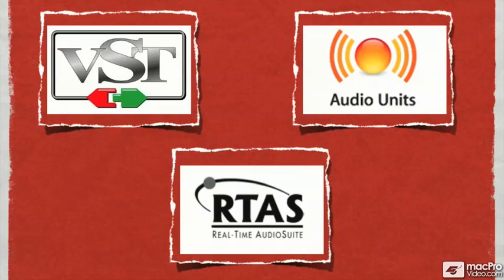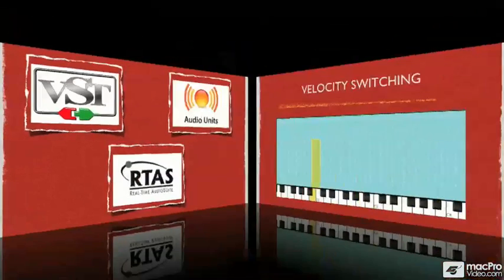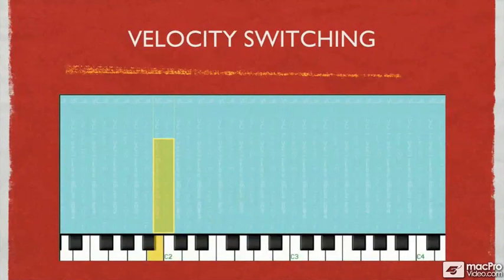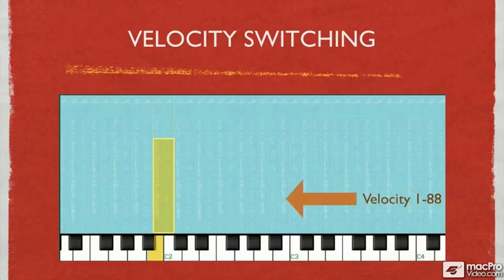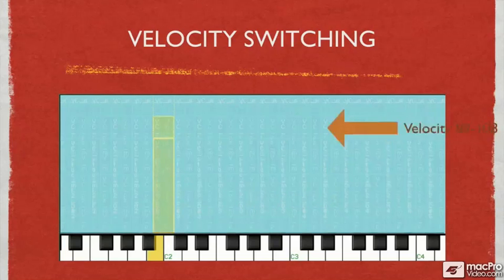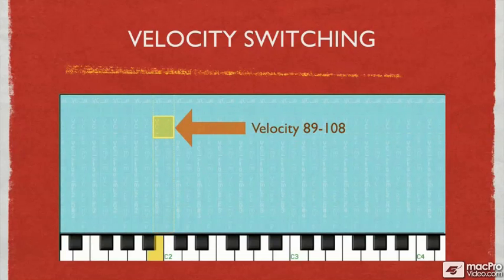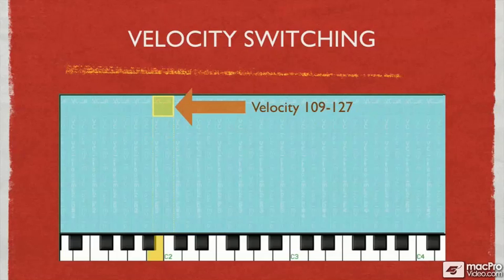Now, every sampler has its own bells and whistles, but there are a few things that no decent sampler could leave out. One of these is velocity switching — the ability to assign different samples to play back based on how hard you hit a key. For example, playing a note softly may trigger one sound, a medium velocity triggers a different sound, and playing it really hard triggers a third sound.